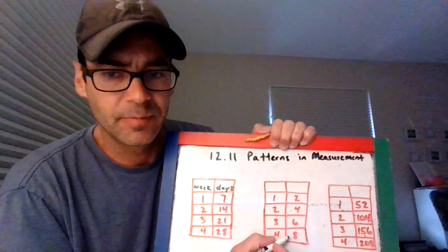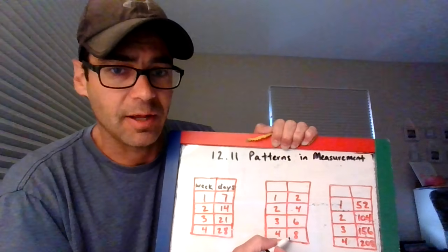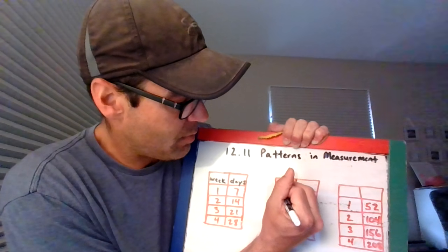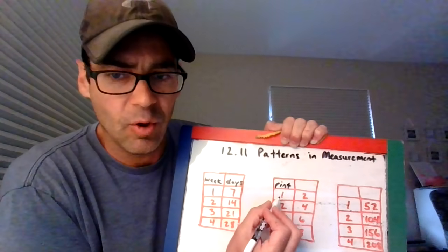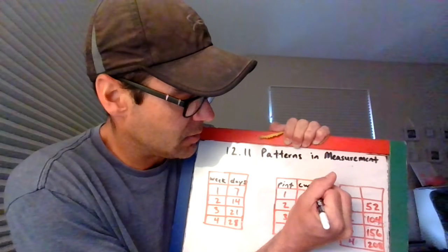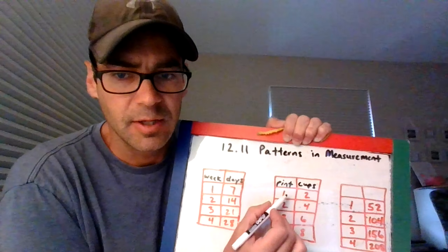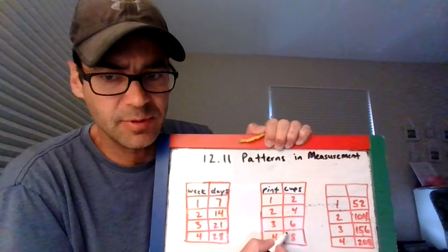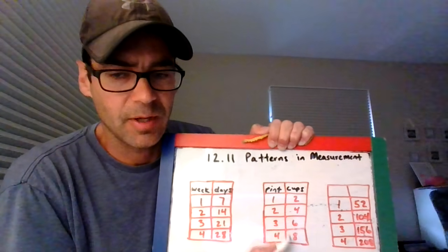Maybe you've figured out that I'm talking about pints and cups. For every one pint, so pint is going to go over here on the left, one pint equals two cups. Our labels are pint and cups. So one pint is two cups, two pints is four cups, three pints is equal to six cups, and four pints is equal to eight cups.